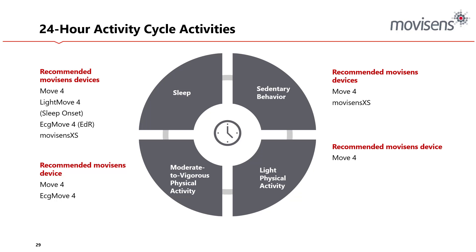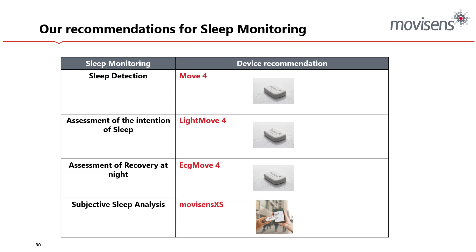For sleep, the MU4 is really good for overall detection; the Light MU4 is needed for assessment of intention to sleep; and the ECG signal provides a massive improvement in understanding nighttime recovery. Subjective sleep analysis through questionnaires — an on-wake questionnaire or a before-bed questionnaire — is supported by our MovieSense movisensXS platform, which works offline, so the phone can be in flight mode on the nightstand as a less distracting option for those who follow recommendations about turning off signals at night.